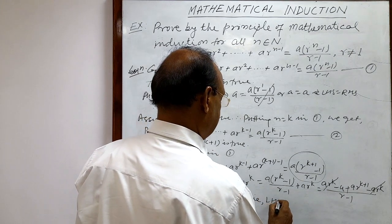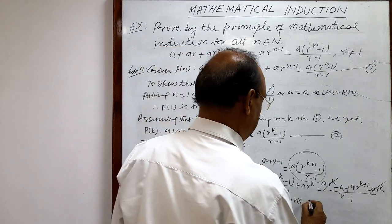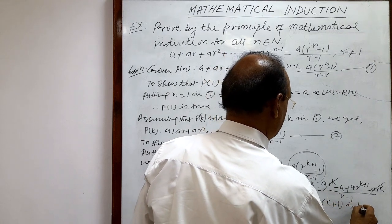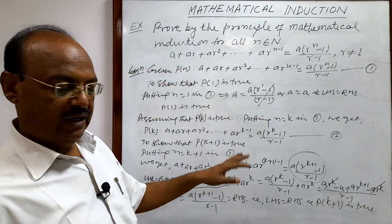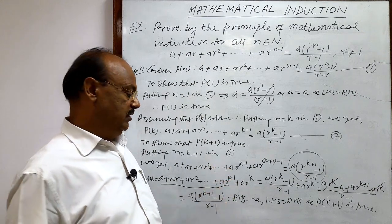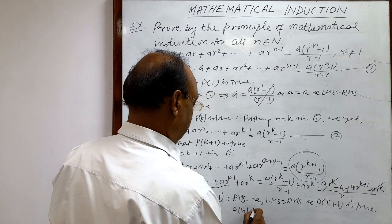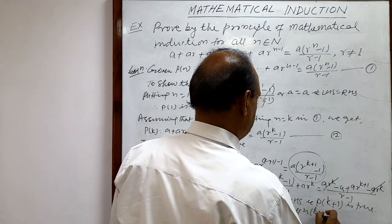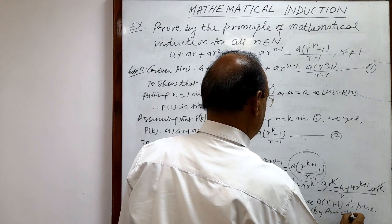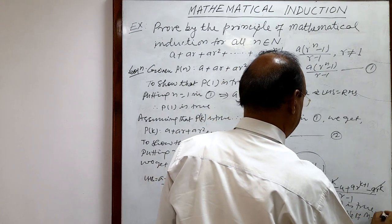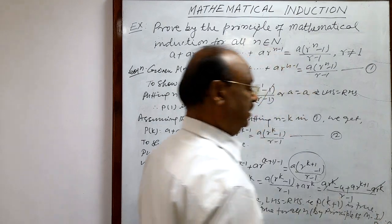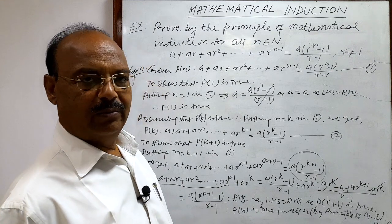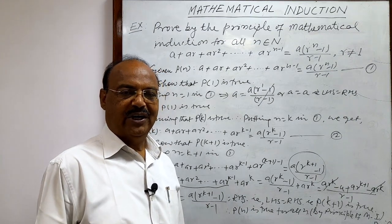Therefore LHS = RHS, which means P(k+1) is true. All three steps are complete. Therefore, the given statement P(n) is true for all n by the principle of mathematical induction. Proved. The solution is very interesting and simple. We will see more problems in other videos. Thank you very much for watching — keep enjoying mathematics!